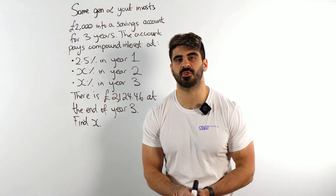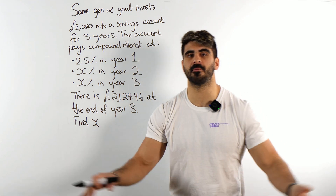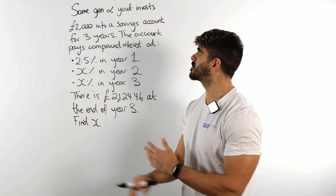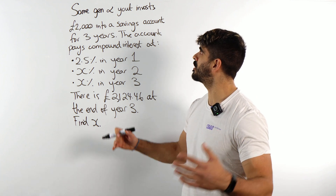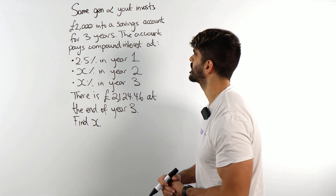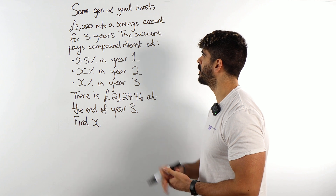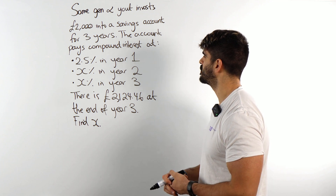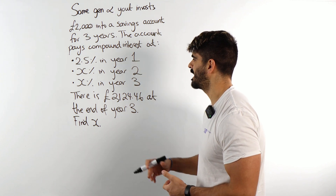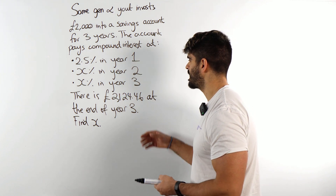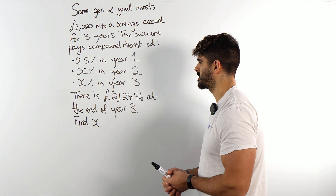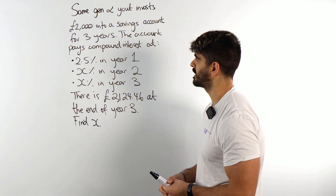One of the hardest compound interest questions you'll ever be asked in your GCSEs. Some Gen Alpha invests £2,000 into a savings account for three years. The account pays compound interest at 2.5% in year one, X% in year two, and X% in year three. There is £2,124.46 at the end of year three. Find the value of X.